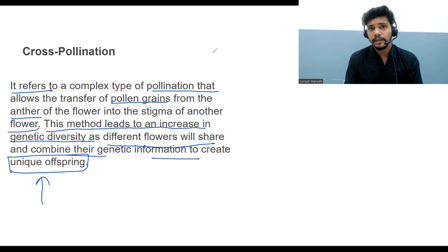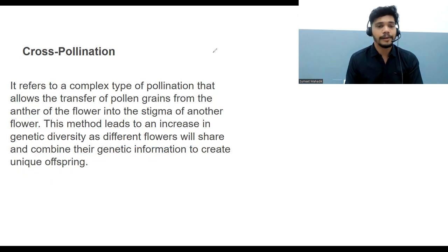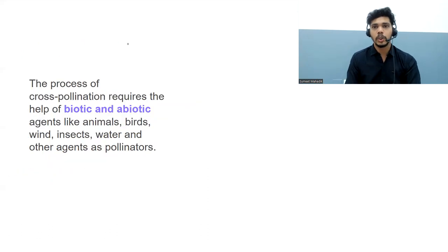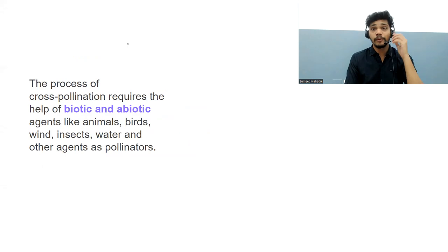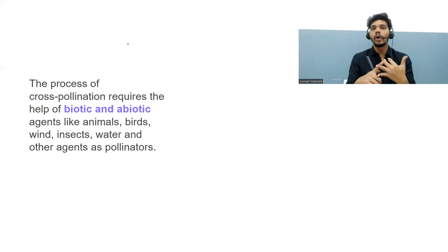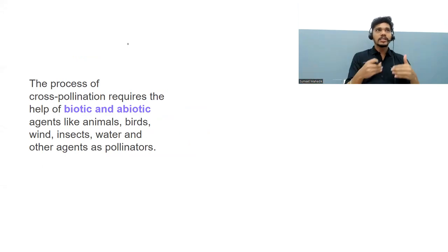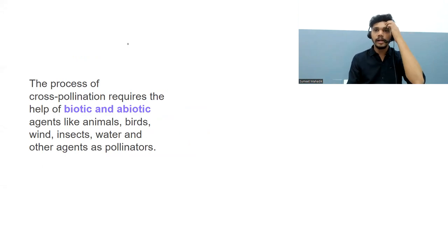The process of cross-pollination requires help from biotic agents — living things like insects — and abiotic agents like wind and water. The pollen grains cannot travel on their own; they require some vehicle or agent. So both biotic and abiotic factors are involved in cross-pollination.